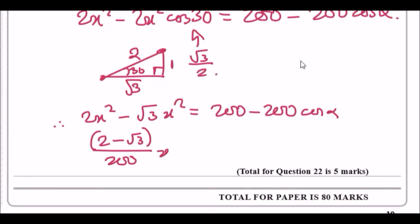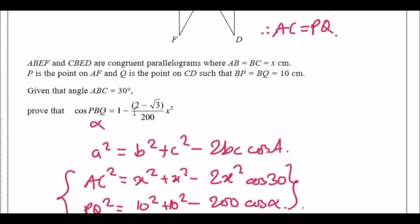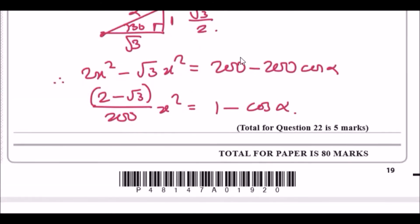And now you'd have to have 1 minus cos alpha. And guess what guys, this is practically it. Just switch the positions around, put cos alpha on the left side and this on the right side.